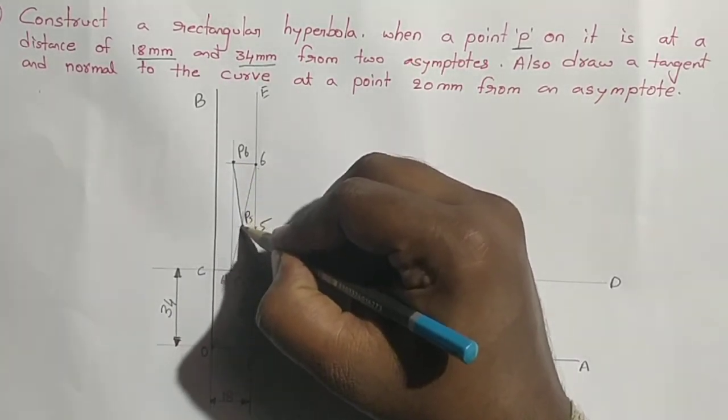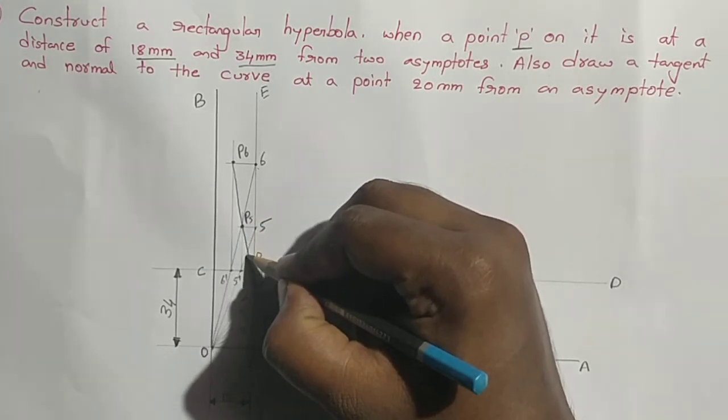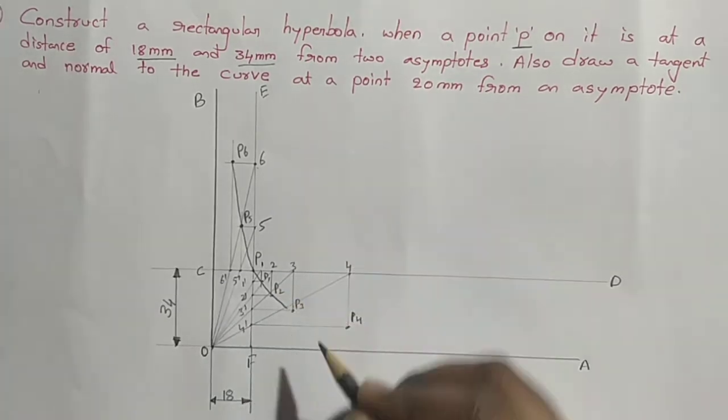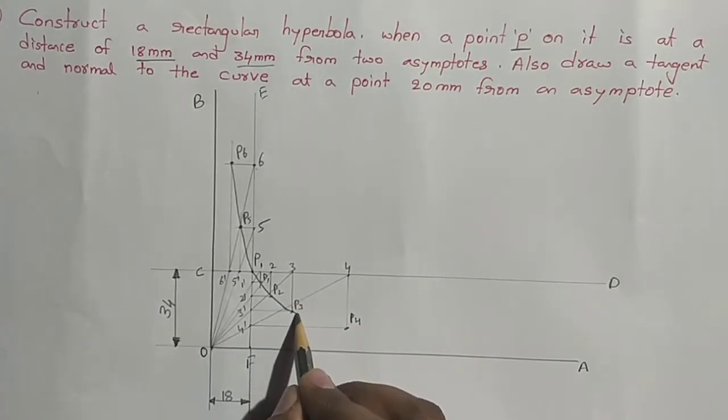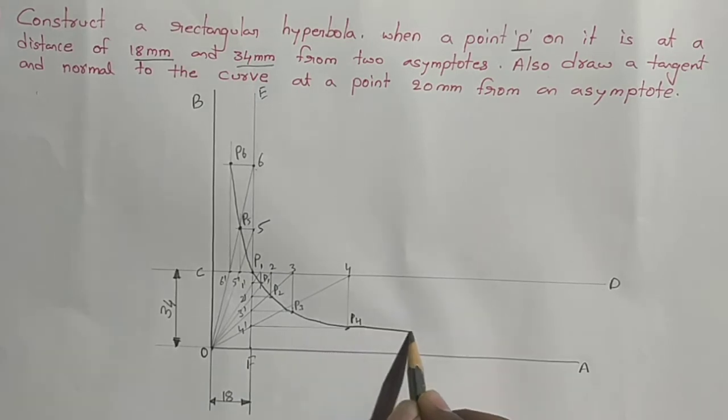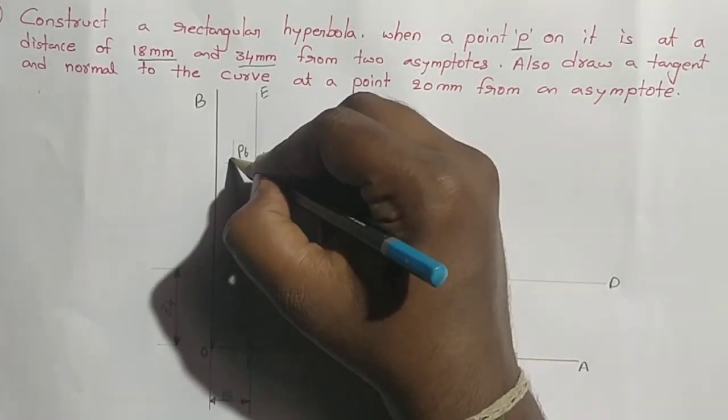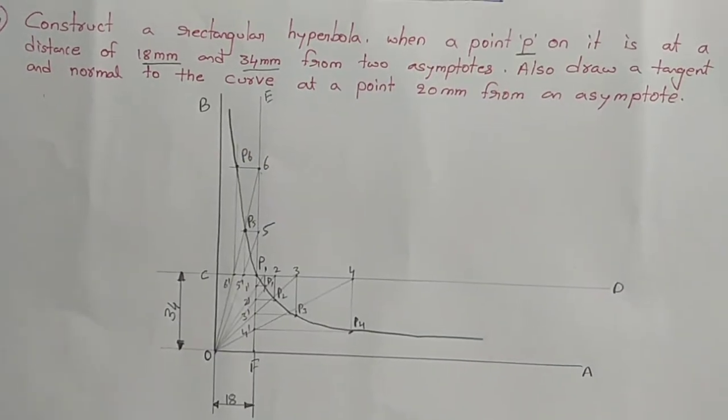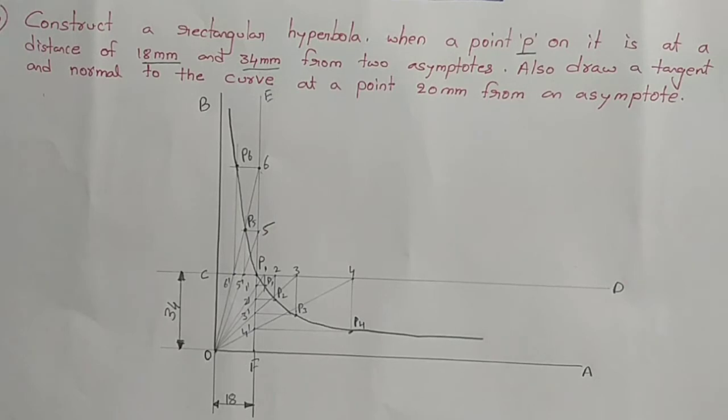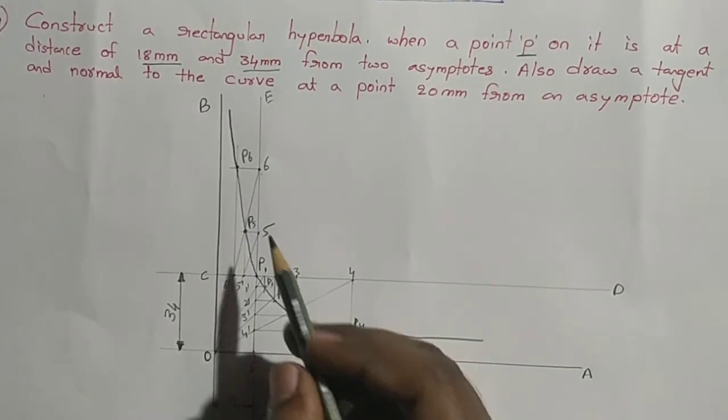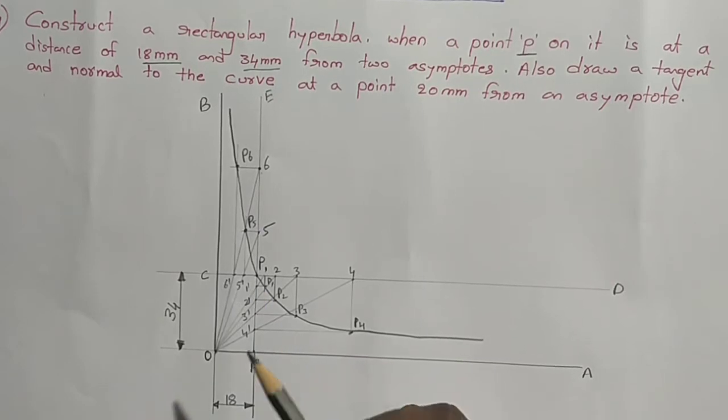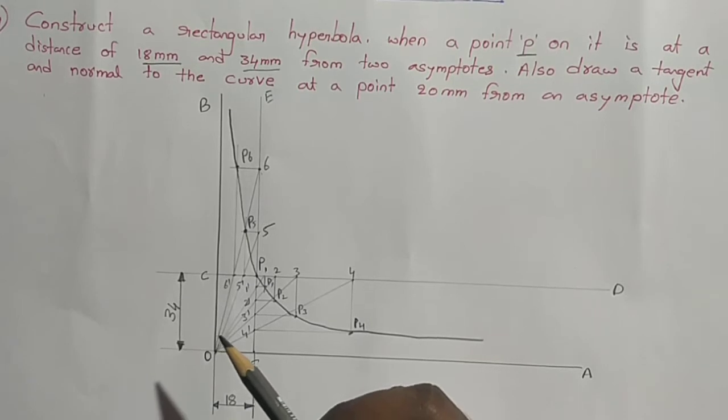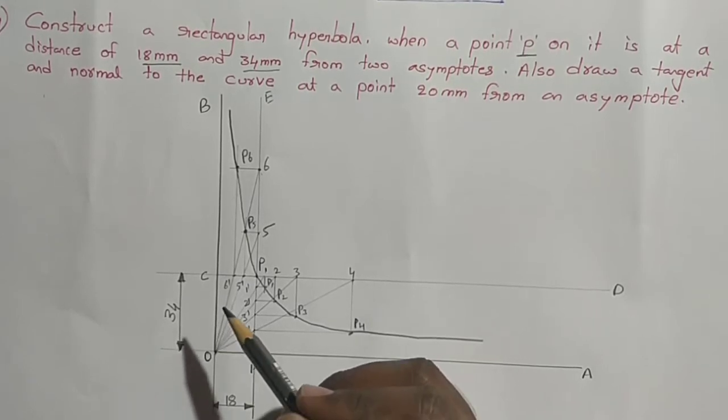Next, join all these points together. Join P6, P5, P, P1, P2, P3, P4 and extend. Now we get the curve.